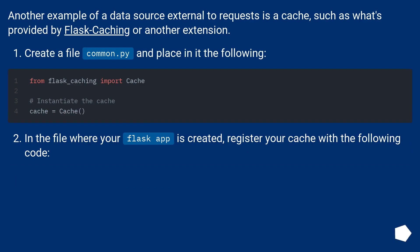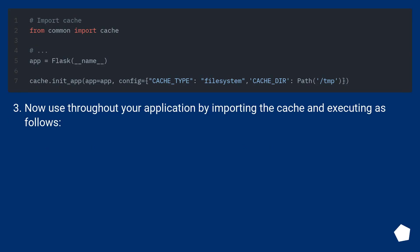Another example of a data source external to requests is a cache, such as what's provided by Flask-Caching or another extension. Create a file common.py and place in it the following. In the file where your Flask app is created, register your cache with the following code. Now use it throughout your application by importing the cache and executing as follows.